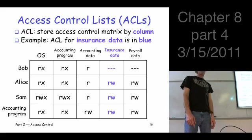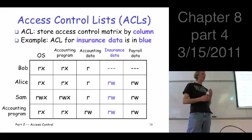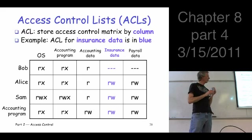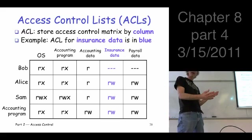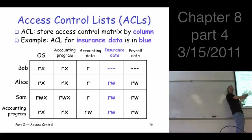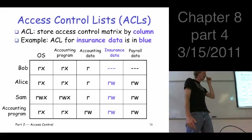W stands for write, R stands for read, and X stands for execute. So now we've got a bunch of separate columns that we can store — we don't have to have them all active at the same time.